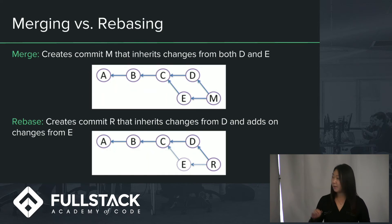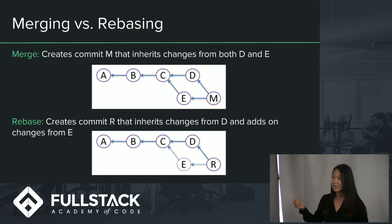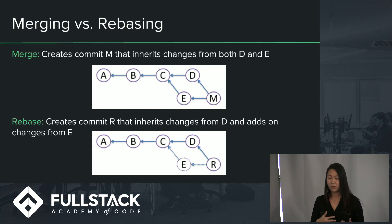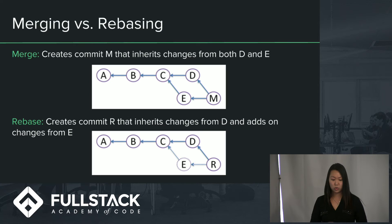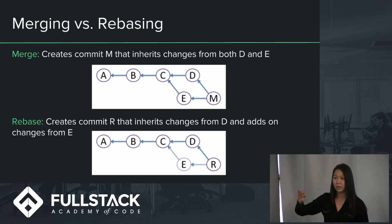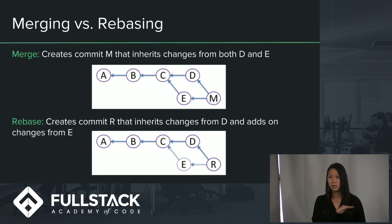Let's compare the two in detail. Originally there were three commits A, B, and C. Developer David comes along and creates commit D, and then developer Ed creates commit E. With a merge, GitHub creates a merge commit M which inherits both changes D and E. But with a rebase, it avoids that diamond shape — developer Ed's commits essentially inherit D, and he creates commit R at the bottom. So it preserves a very linear project history that's easier for future developers to follow.